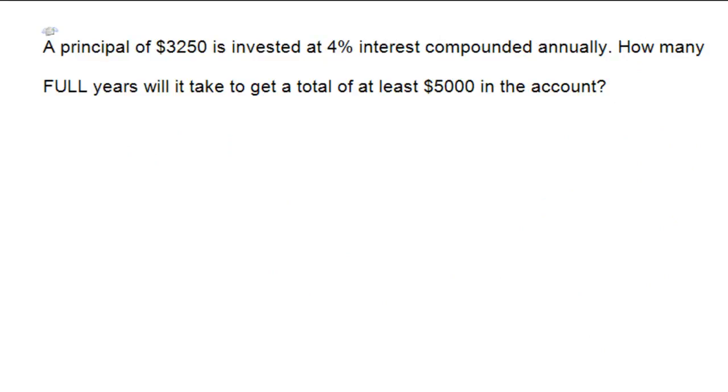We have a principal this time of $3,250. We wish to put this in a bank account that is earning 4% interest. So inside of the parentheses here, we're going to have a 1.04 raised to the power of T, representing the number of years. And I wish for this to be at least $5,000.